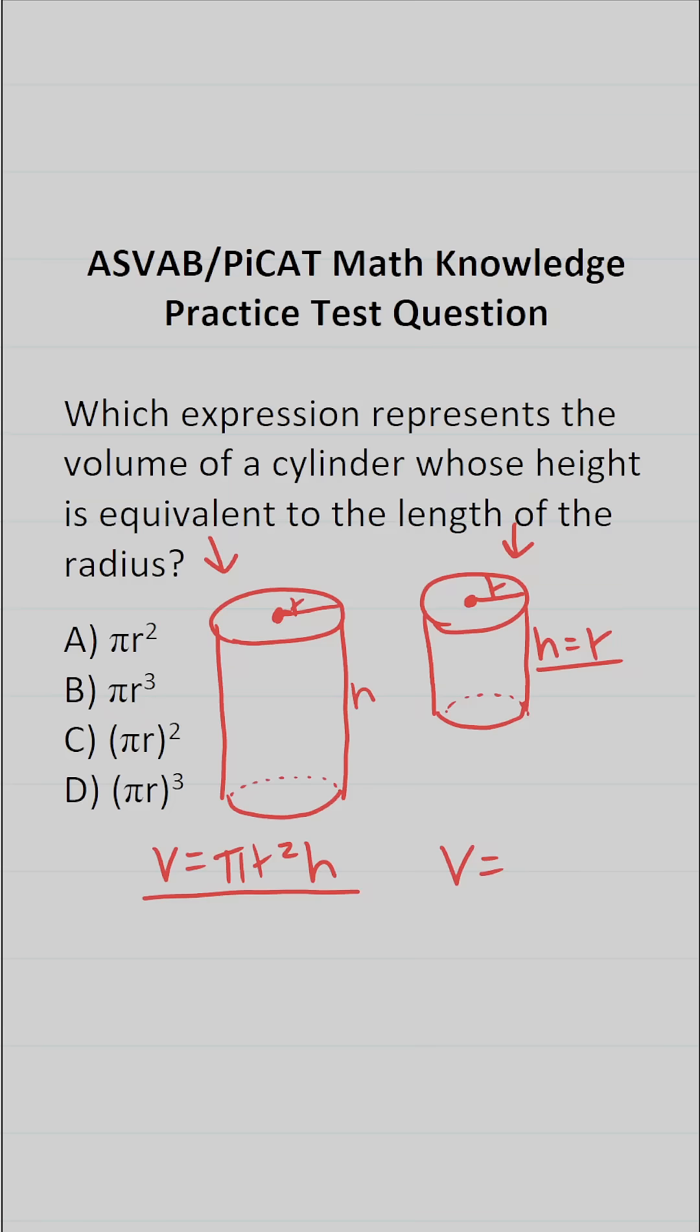We're going to find the area of its circular face, which is going to be pi R squared. That part doesn't change. But we can see that H is equal to R. So instead of having H here, we're going to replace it with R. So this becomes volume equals pi R squared times R.